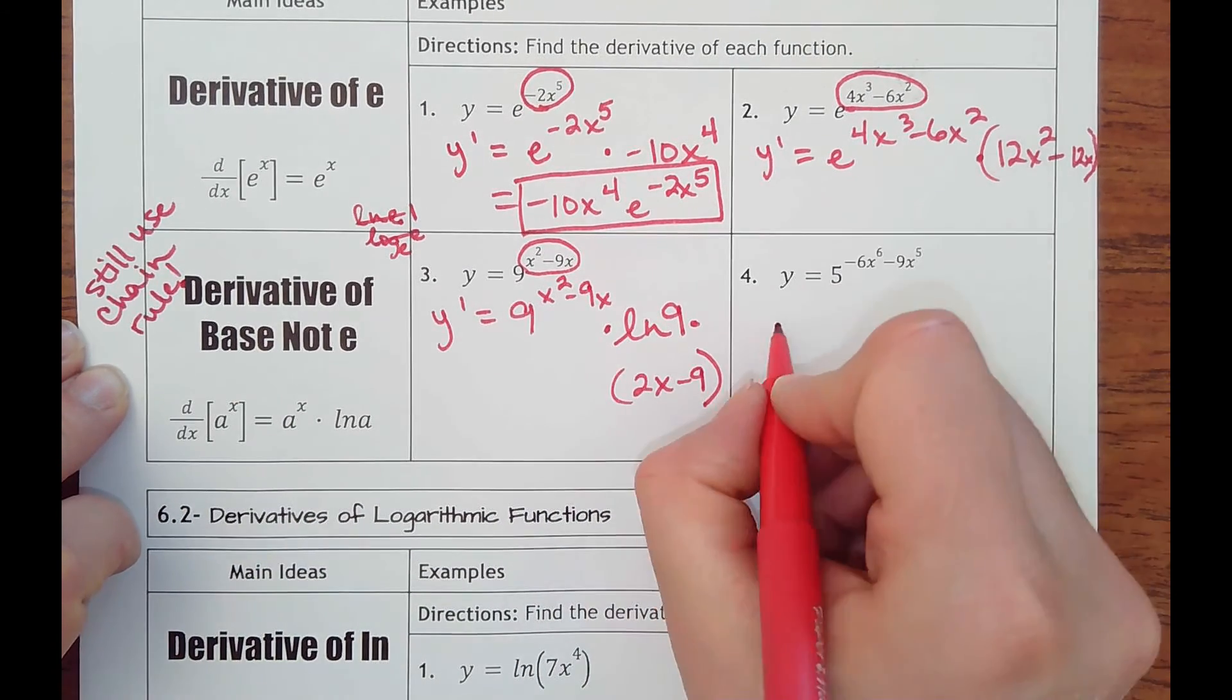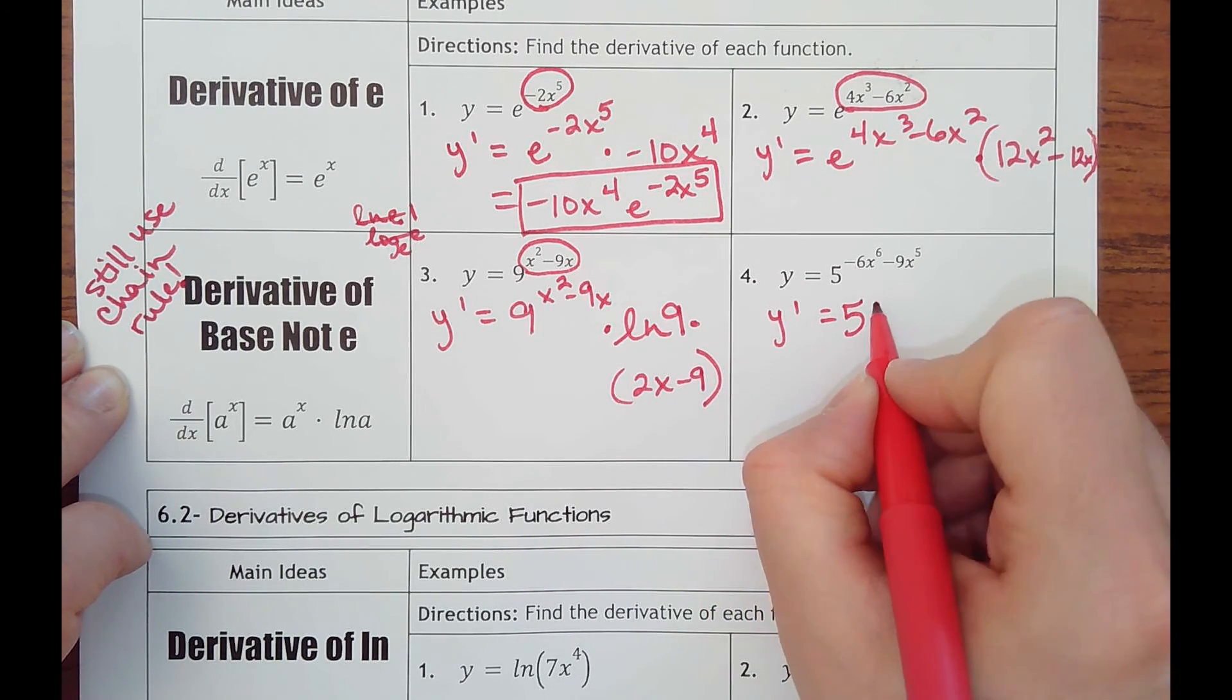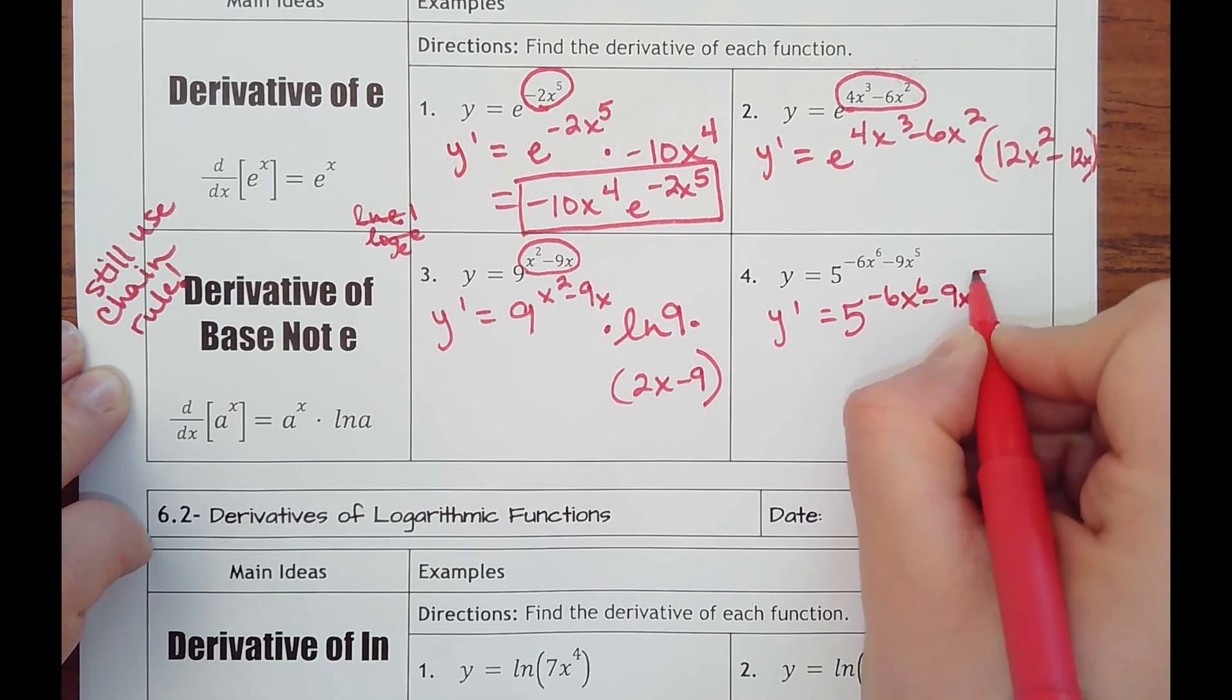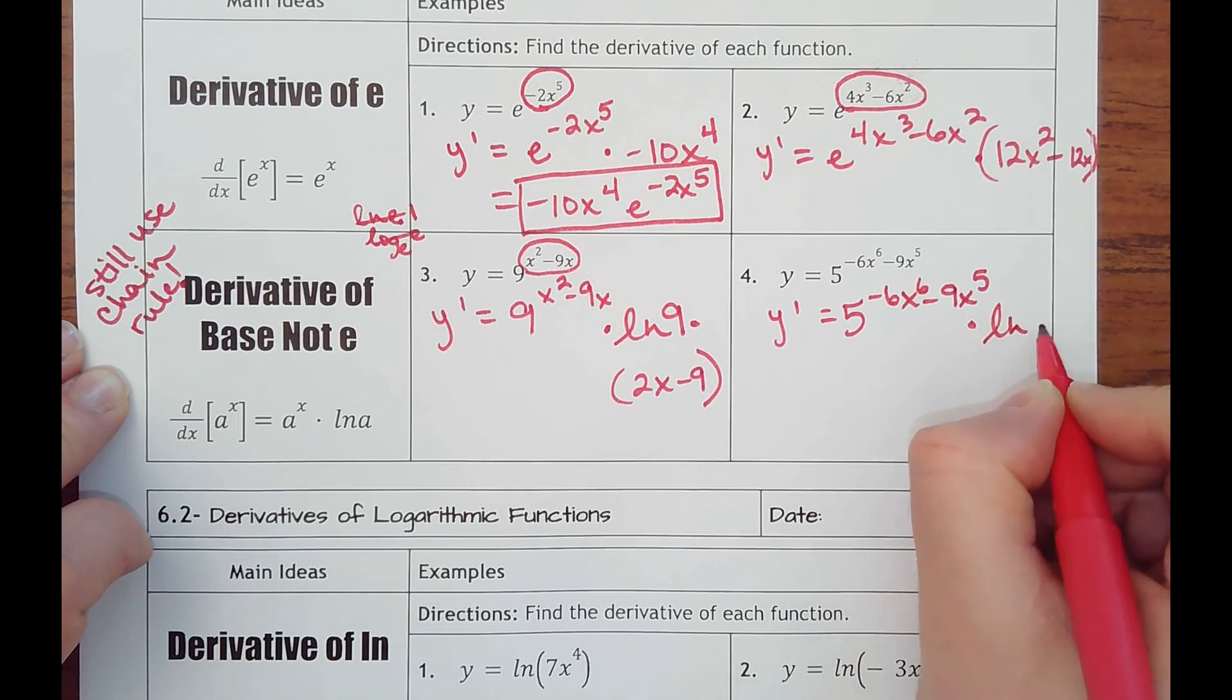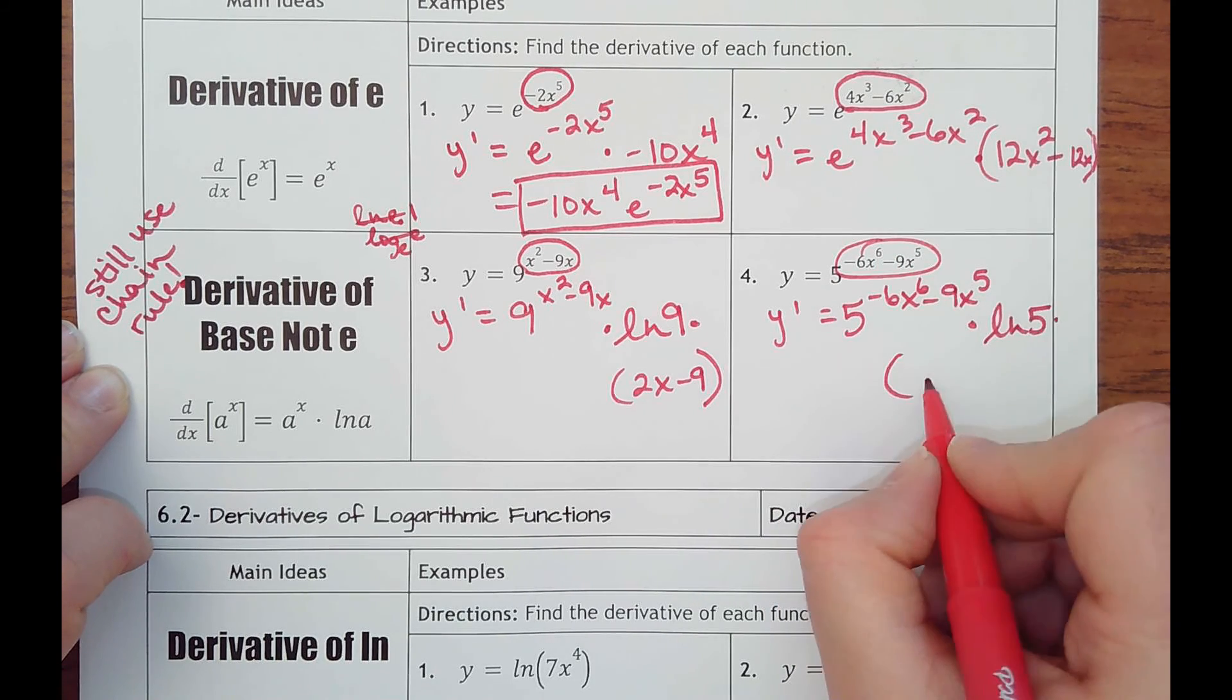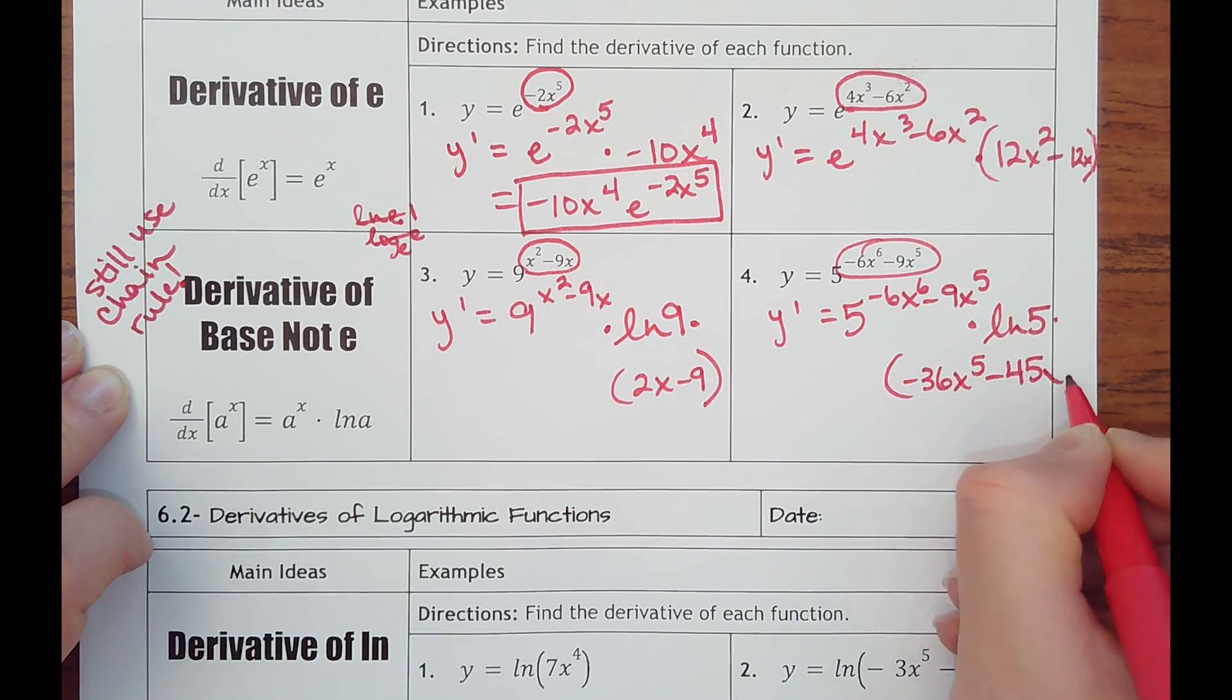Okay, and number four, if you want to pause it and try it you can. Y prime equals itself: 5 to the negative 6x to the sixth minus 9x to the fifth power, times natural log of the base of 5, times the derivative of the exponent, which is negative 36x to the fifth minus 45x to the fourth.